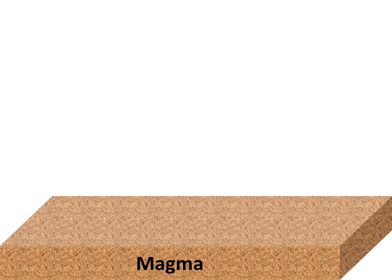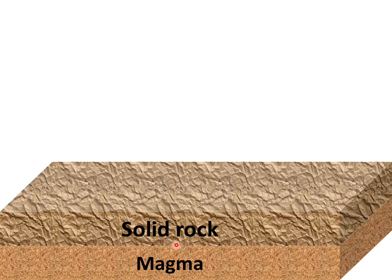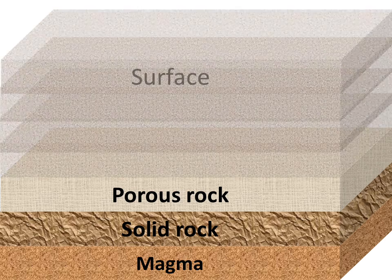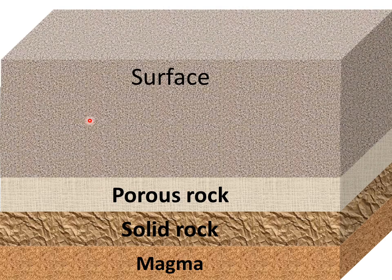Firstly we will discuss the layers of the earth. We have a below layer of magma, which is very hot and in liquid form. From this magma layer, a solid rock is connected. By conduction, this solid rock is heated by the heat of the magma. Above the solid rock there is a porous rock with many holes for travelling water between it, and above the porous rock is the surface.